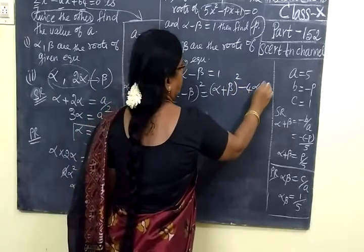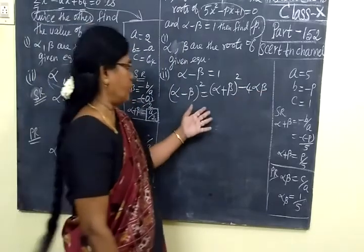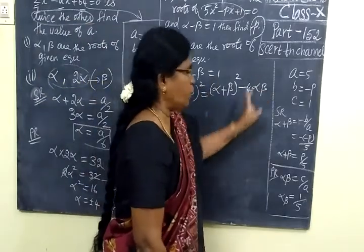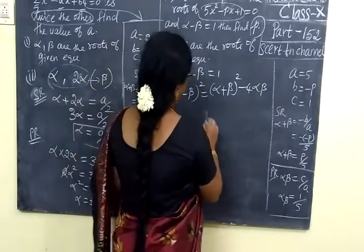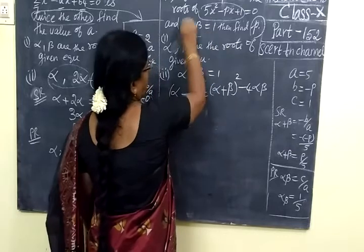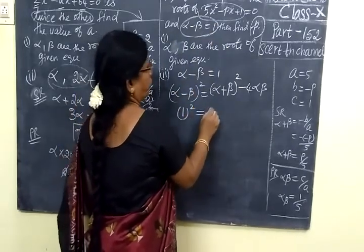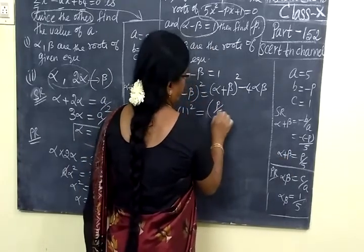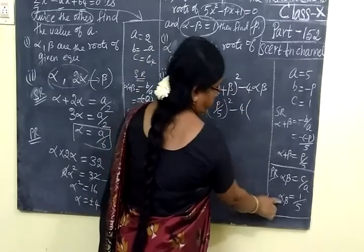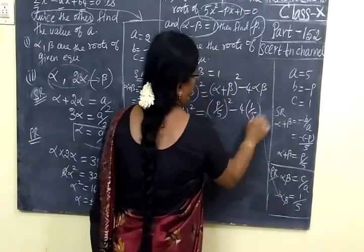We have to find the values using the formula (alpha minus beta)^2 = (alpha plus beta)^2 - 4 alpha beta. In the previous class we have seen this formula. Now here alpha minus beta is given as 1. So in the place of alpha minus beta you can write 1 squared equal to alpha plus beta which is 3 by 5 whole square minus 4 bracket alpha beta which is 1 by 5.